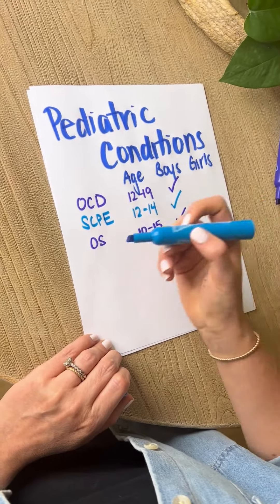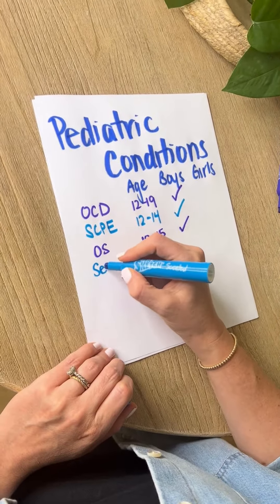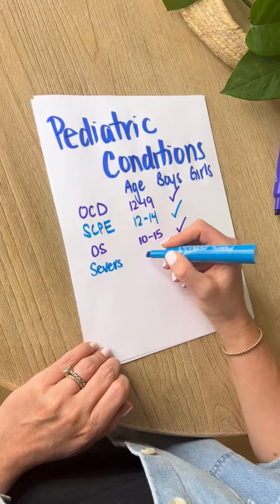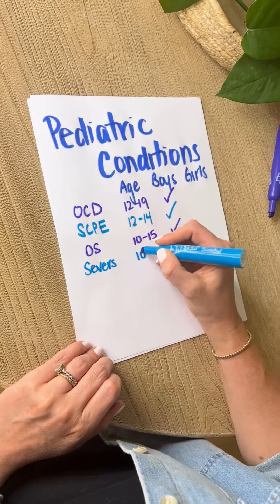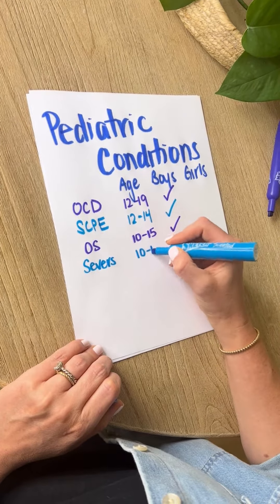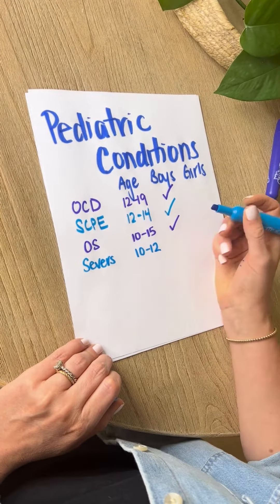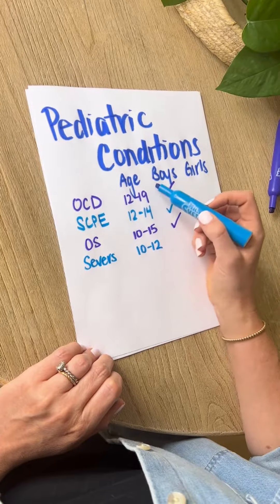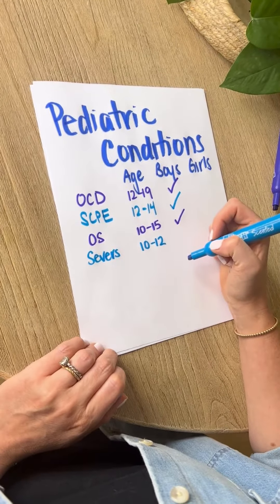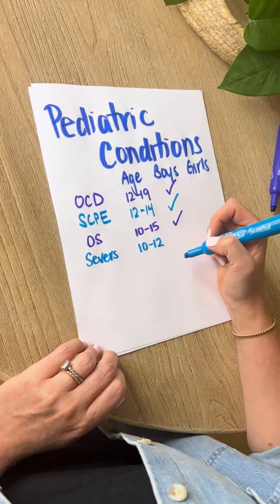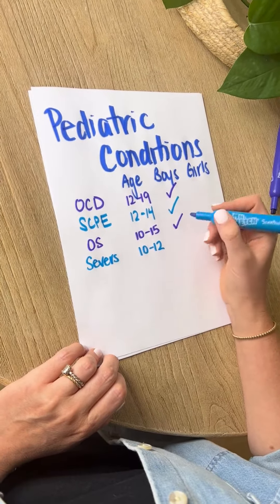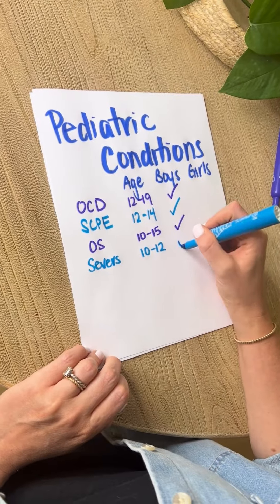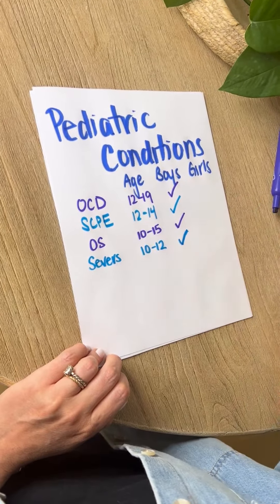Sever's disease is more common in adolescents around 10 to 12 years old. It's important to know that Sever's disease is rare in older teens because by late adolescence, a child's growth plate has already hardened into solid bone. And it's more common in boys.